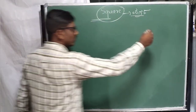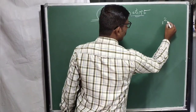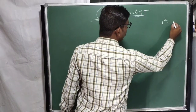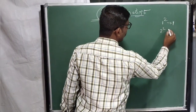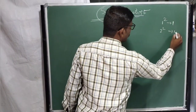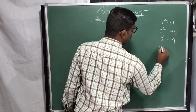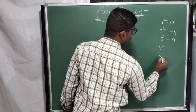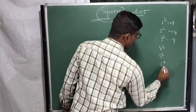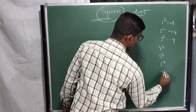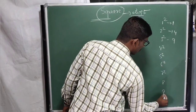You just need to know the squares in order. 1 squared is 1, 2 squared is 4, 3 squared is 9, 4 squared, 5 squared, 6 squared, 7, 8, 9.